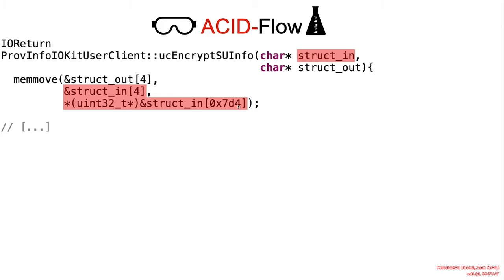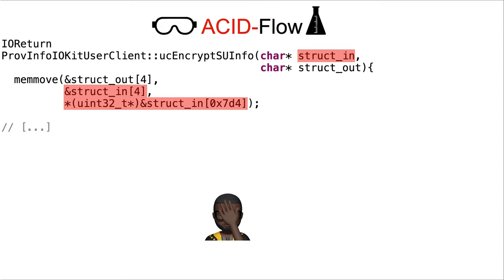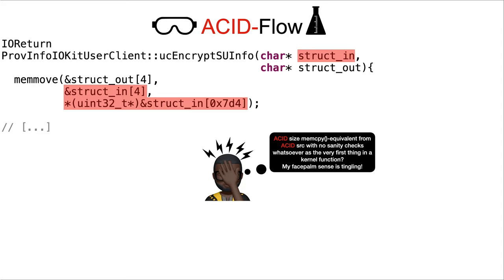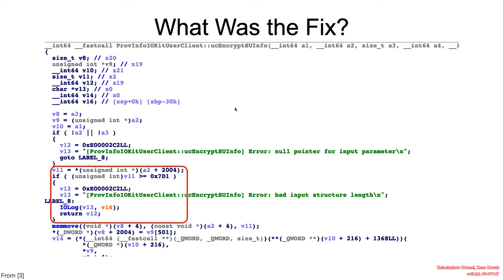There we have a memcopy-equivalent from an attacker-controlled source with no sanity checks whatsoever, and it's the very first thing in the function. My Spidey sense is tingling. What was the fix? Some validations were performed on the size variable before the memmove.